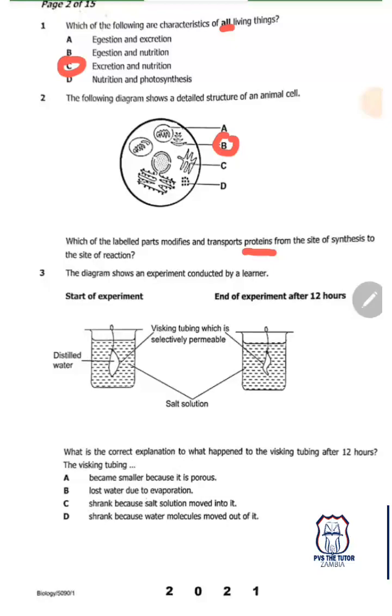Question three: The diagram shows an experiment conducted by a learner. We have the start of the experiment and the end after 12 hours. In the beginning, the visking tubing has distilled water and there's also this salt solution. What is the correct explanation to what happened to the visking tubing after 12 hours?